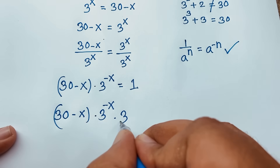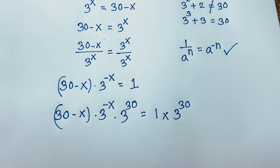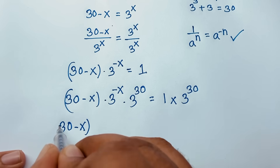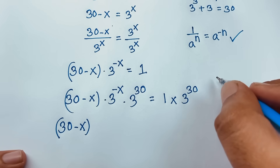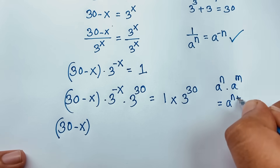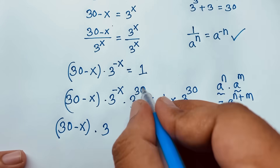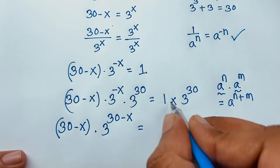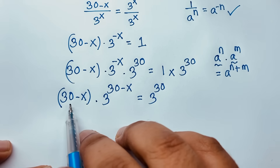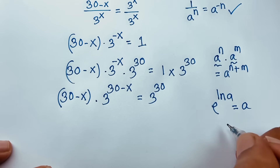Multiplying both sides by 3 to the power 30 gives us 30 minus x times 3 to the power 30 minus x equals 3 to the power 30. Using the exponential law a to the power n times a to the power m equals a to the power n plus m — since both bases are 3 — we get 3 to the power 30 minus x. Now I apply the formula e to the power ln a equals a.